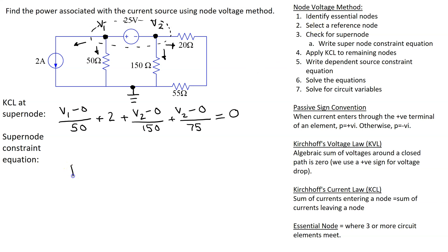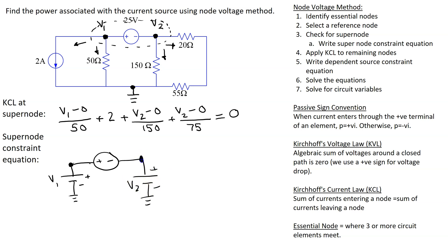We represent v1 as a voltage rise with respect to ground, then we have the 25 volt voltage source, and we also represent v2 as a voltage rise with respect to ground. This is why v1 and v2 are represented with this polarity — because these are voltage rises with respect to ground.